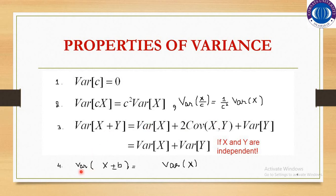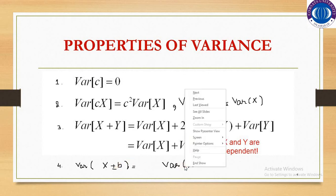Property number 4: the variance of x plus b or x minus b, where b is some constant, is always equal to the variance of x.